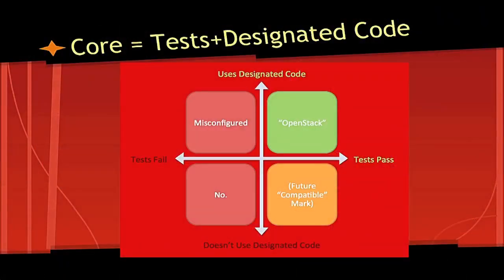There are two things in the matrix. There's designated code — code defined by the technical community as must-be-included — and the TC has a set of ratified principles that define how you know what is and isn't designated code. When writing code for a project, it should be very clear reading those principles whether the code is designated or not — things like, was it meant to be replaceable? Does it have multiple implementations?